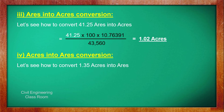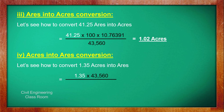The fourth conversion is acres to ares. Let's see how to convert 1.35 acres into ares. For that, we multiply 1.35 by 43,560, then divide that whole value by the product of 10.76391 and 100. The answer is 54.63 ares.